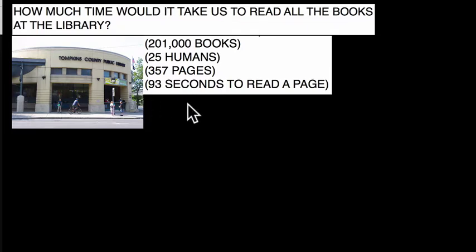Now, a couple other things to consider is that if 25 people are reading these books, how are they doing it? Are they doing it in certain chunks of time? What's going on? Well, we decided to make this problem as simple as possible with these variables. 25 people, all reading side by side, without breaks, until the 201,000 books are done.